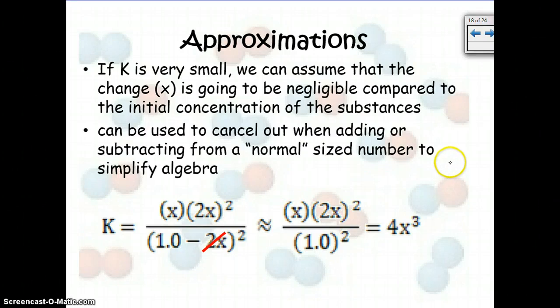In this podcast, we're going to talk about some approximations we can use when we're solving equilibrium problems that will help simplify the algebra for us and can get us to a pretty fair answer. So if K is very small, so we're talking about times 10 to the negative something, we can assume that the change in x is going to be negligible compared to the initial concentration of the substances.